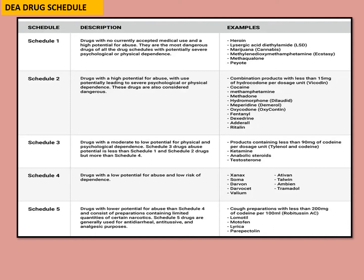Schedule 2 includes combination products with less than 50 mg of hydrocodone, cocaine, methamphetamine, methadone, hydromorphone, meperidine, fentanyl, and Adderall. Schedule 3 has moderate abuse liability — lower than Schedules 1 and 2 — like ketamine, testosterone, and preparations with less than 90 mg of codeine, such as Tylenol 3 with 30 mg of codeine. Schedule 4 has very low risk of abuse and dependence: Xanax, benzodiazepines, Valium, tramadol, and Soma. Schedule 5 has the least abuse potential — preparations with less than 200 mg of codeine, or less than 20 mg of codeine per 100 mL like in cough syrup, as well as Lomotil and Lyrica.